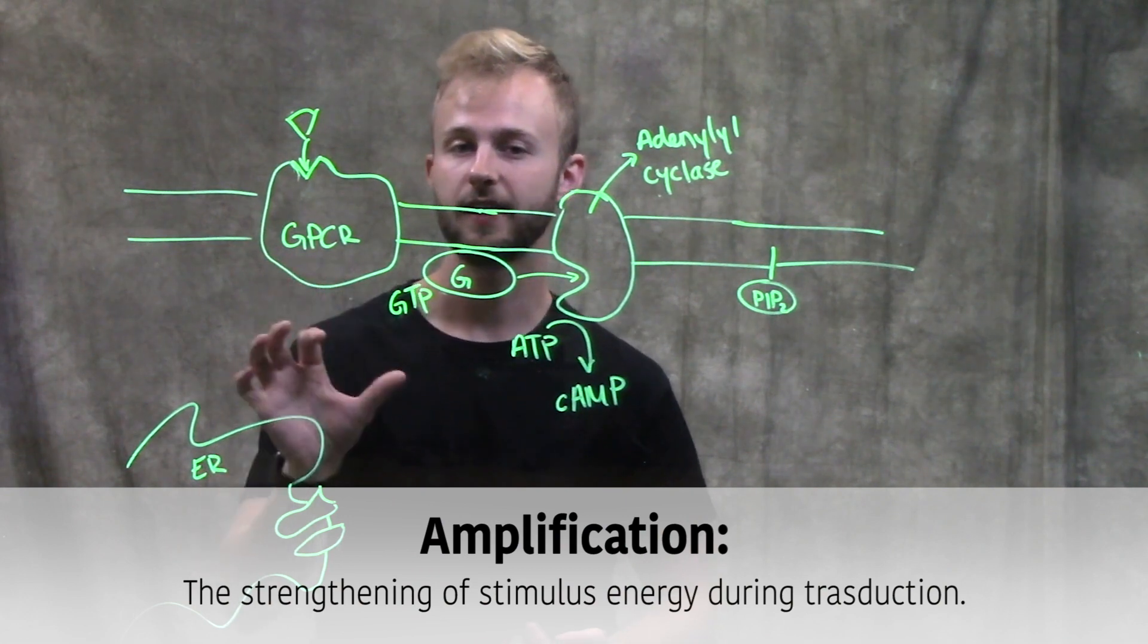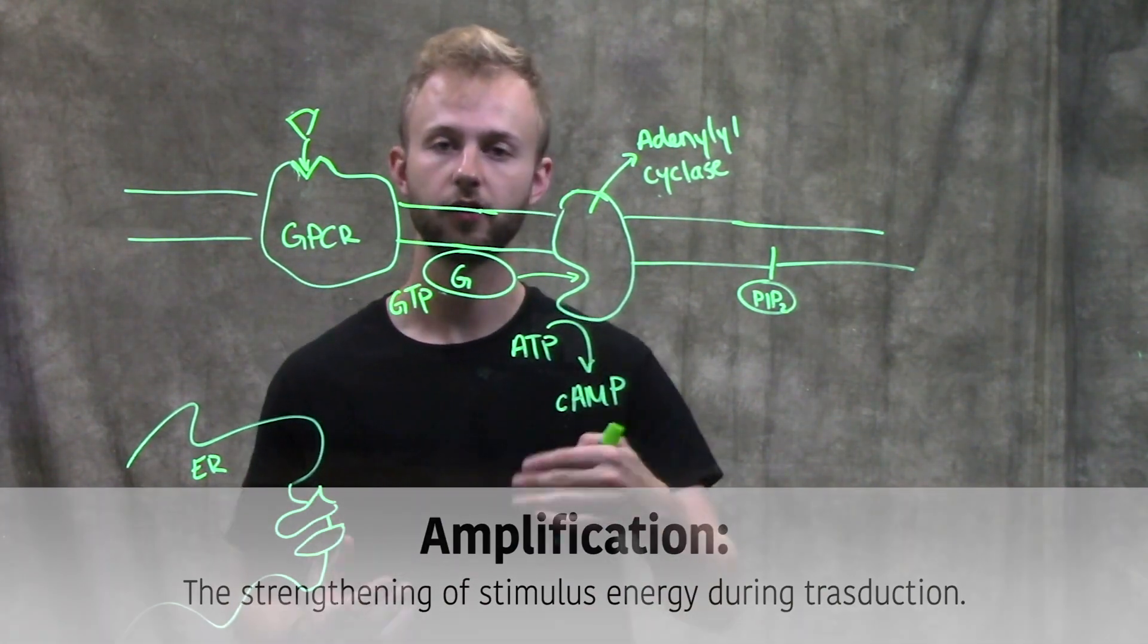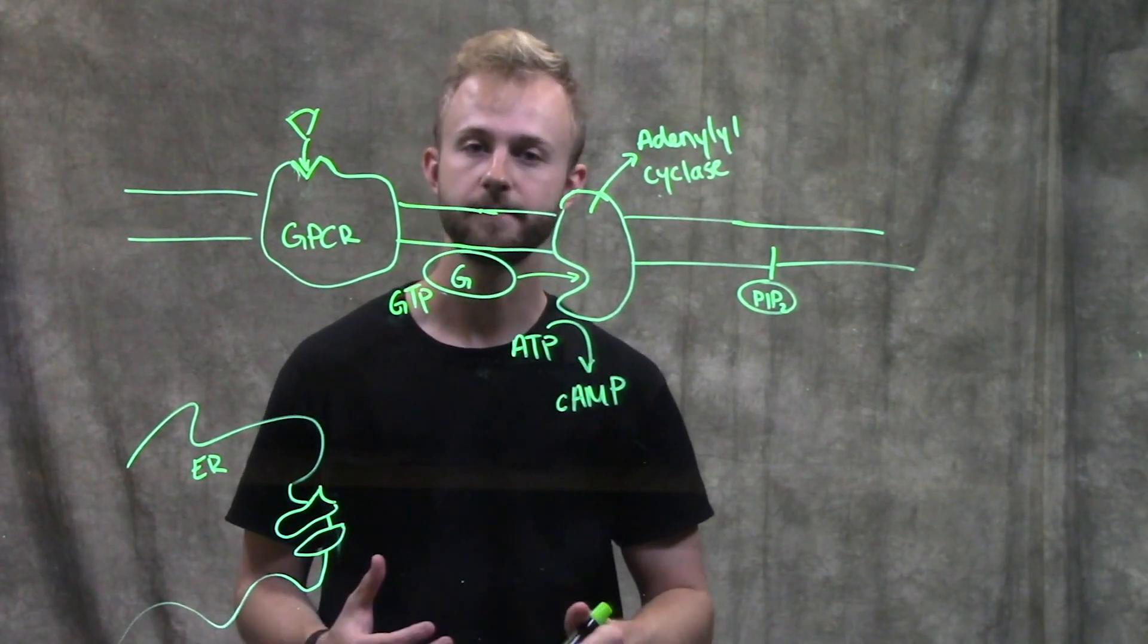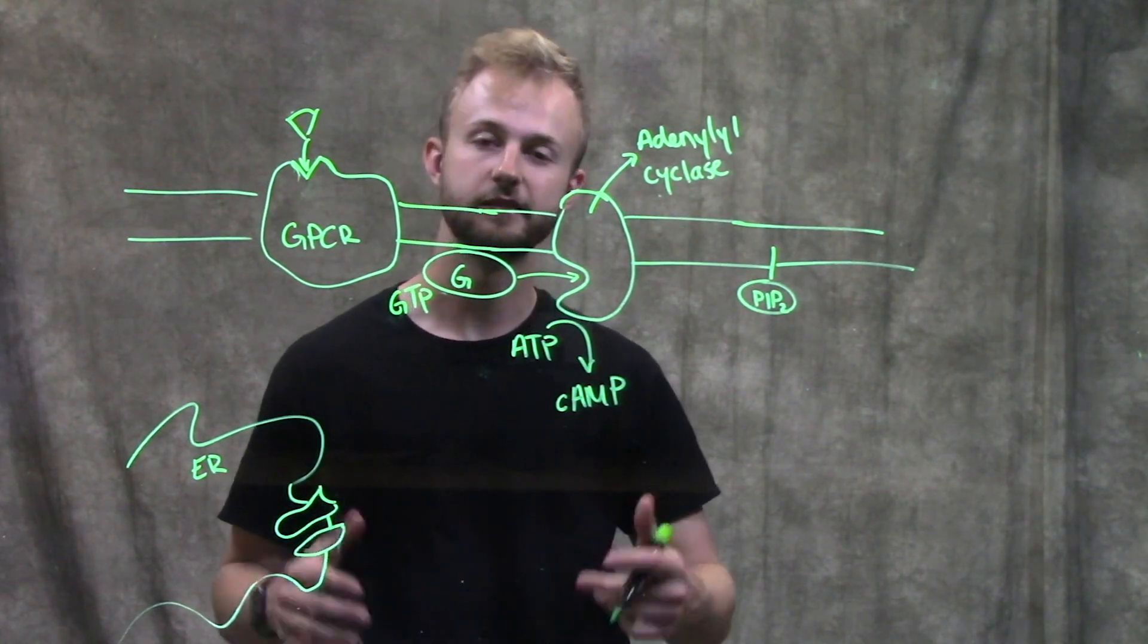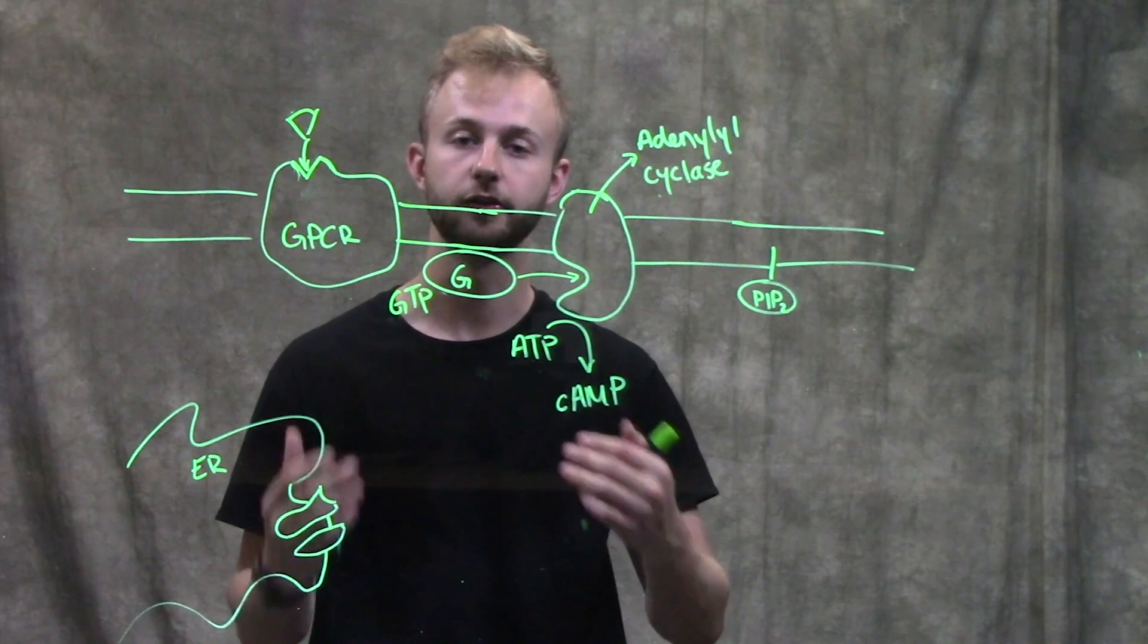If we just have one receptor that's activated and we're producing just one or a couple molecules of cyclic AMP, the cell is not really going to do anything and it's not going to really respond to that because the signal isn't above a particular threshold.